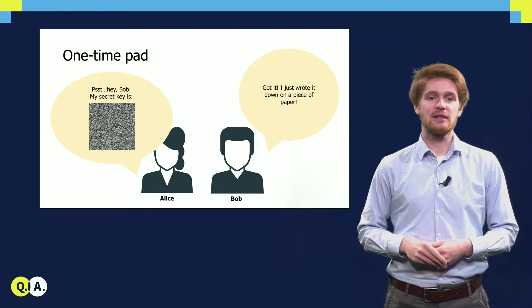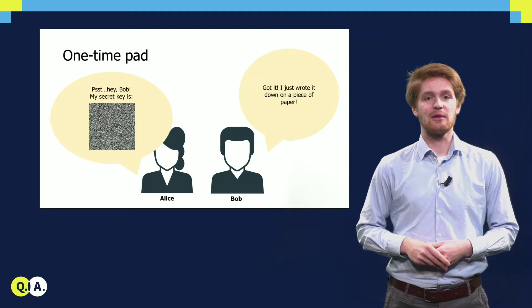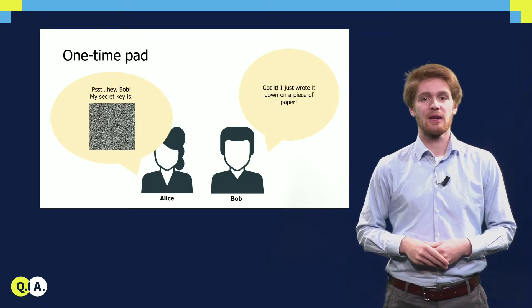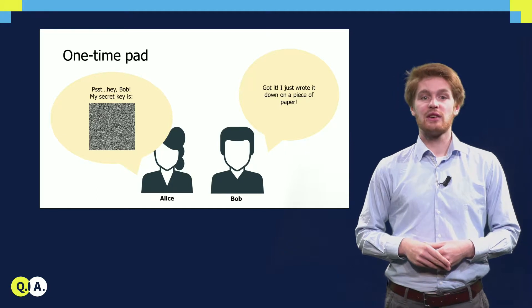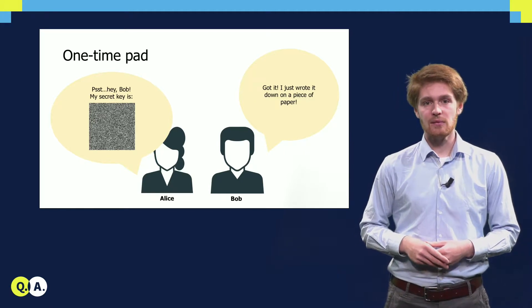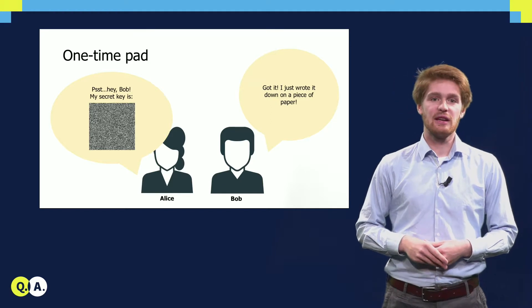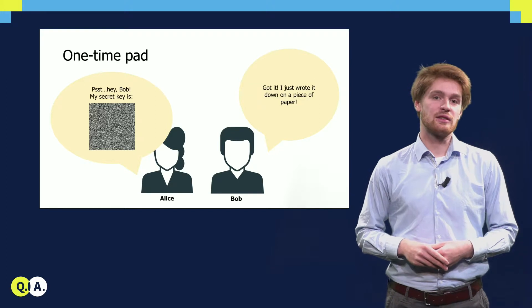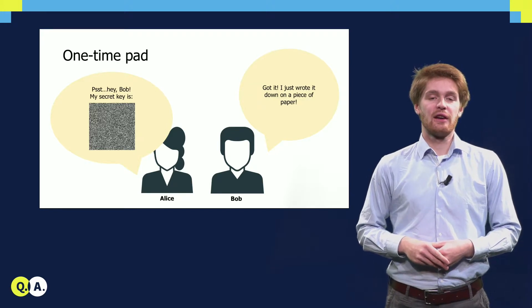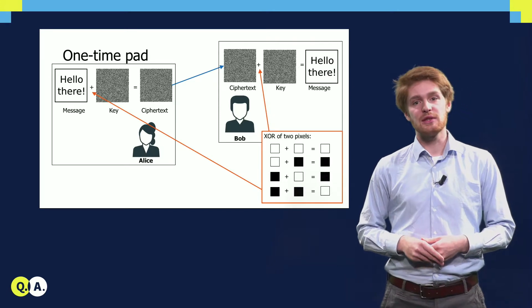The first step in a one-time pad scheme is that Alice creates a secret key, here depicted on the left as a black and white pixel image. The key should be chosen completely random in order to guarantee security of the scheme. Alice then goes to Bob and Bob copies the secret key, for example on a piece of paper, where he stores it digitally on his computer. Now Alice and Bob go their own way each, and later on Alice wishes to send a secret message to Bob.